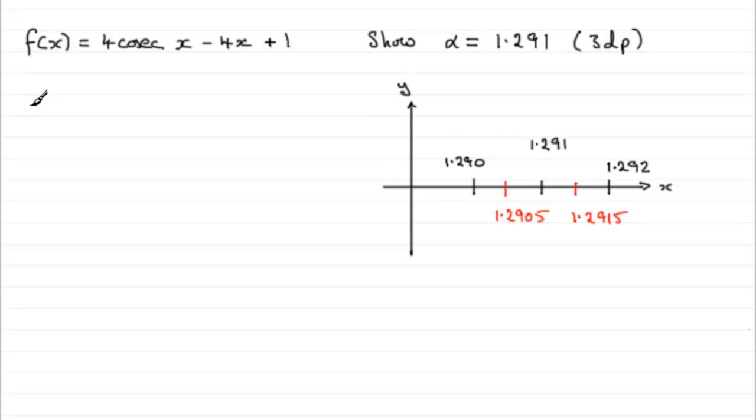So, all I need to do then is, first of all, work out what f of the 1.2905 value is going to be. So, f of 1.2905. All we need to do then is just substitute it into here. Cosec, remember, is going to be 1 over sine x. So, that's going to be 4 divided by the sine of 1.2905, and then we've got minus 4 times 1.2905, and then plus 1. Remember to have your calculator in radians mode. And if you do this, what you find you get is 0.000456 and so on. So check that out on your calculator.